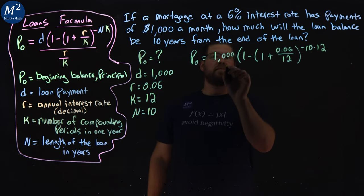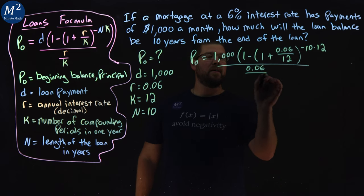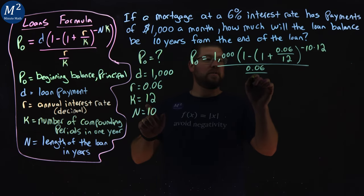All over here, r over K, 0.06 over a K value, which is 12.